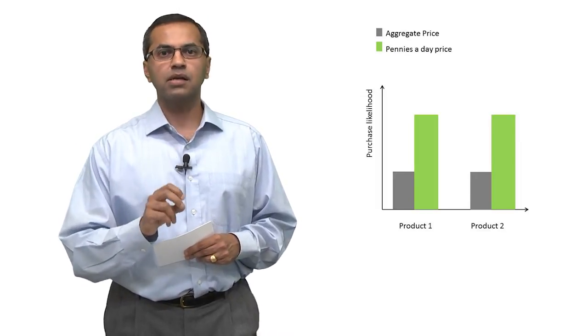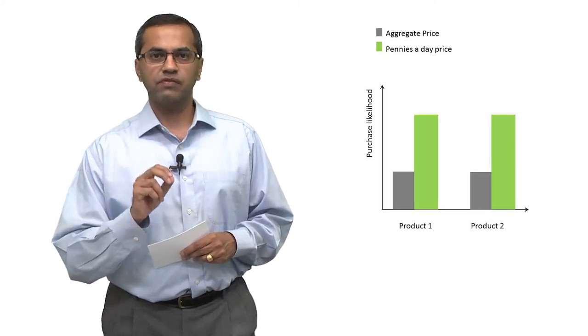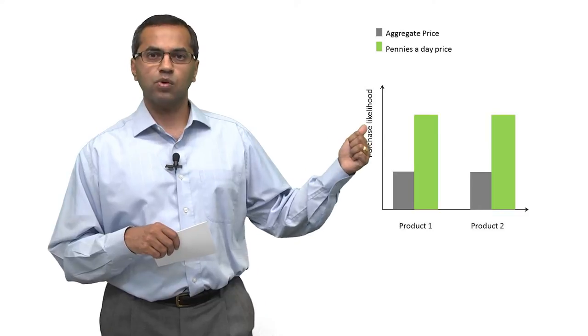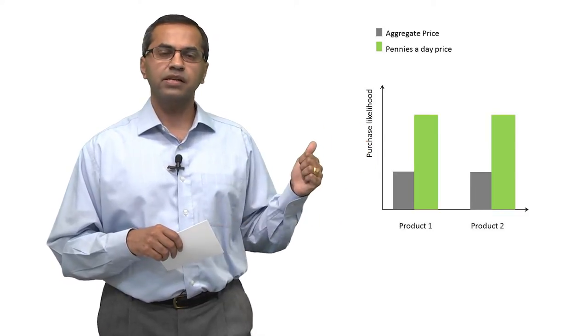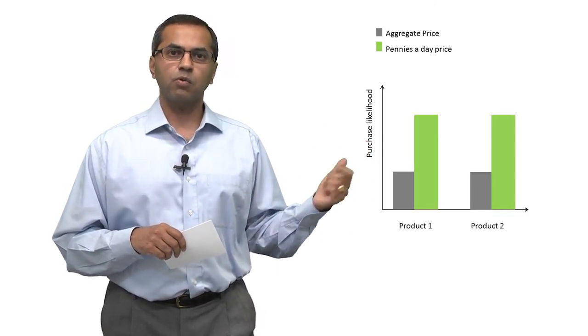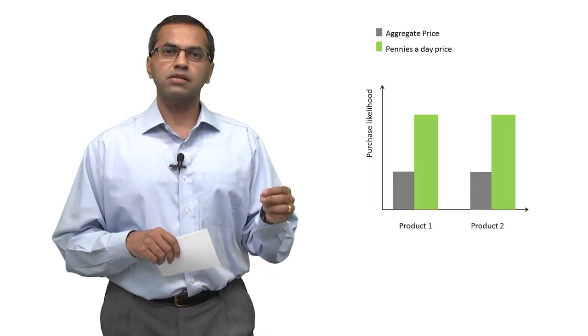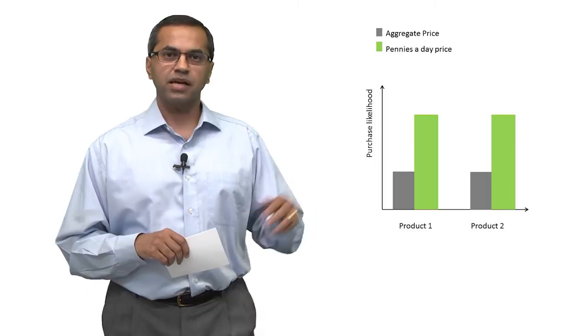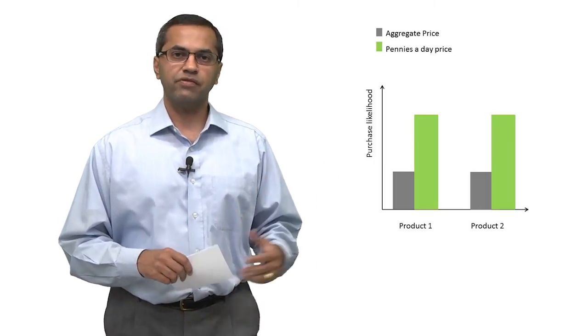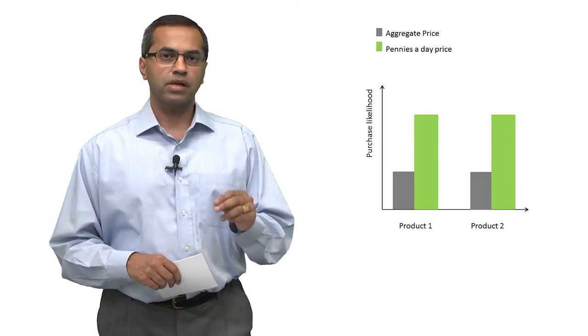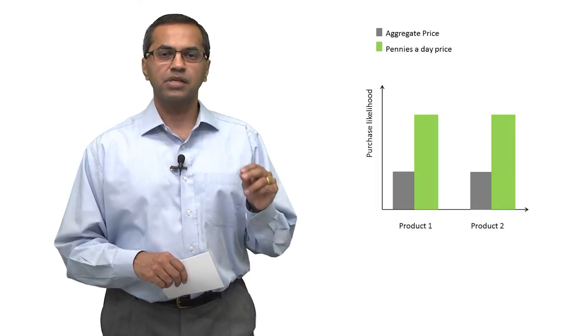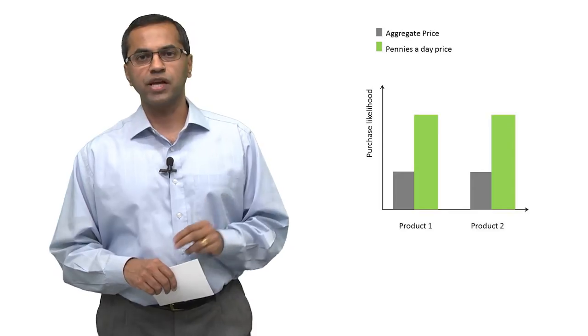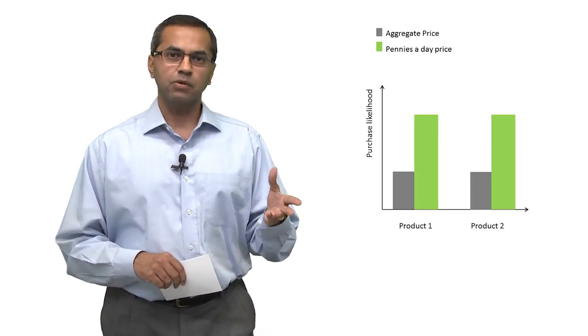In this context, we might see results that look like that. On the left-hand side, you see that for product one, the pennies-a-day results in a greater willingness to donate than the aggregate. On the right-hand side, for product two, we see the same exact effect. In this case, there is no interaction effect, but simply a strong main effect of the way in which you frame the amount, pennies-a-day versus aggregate.